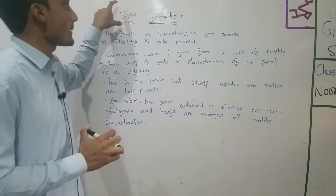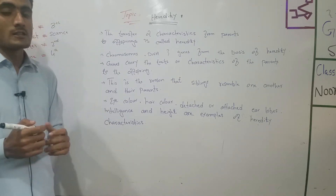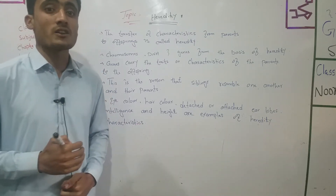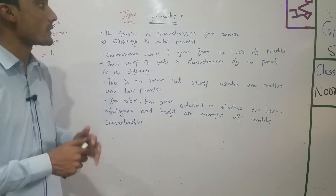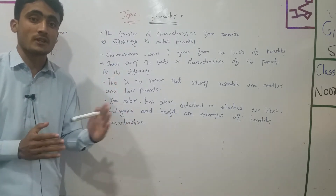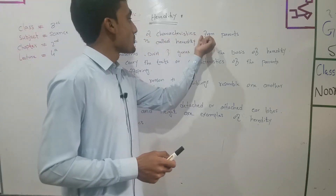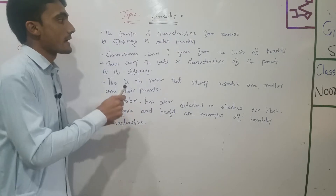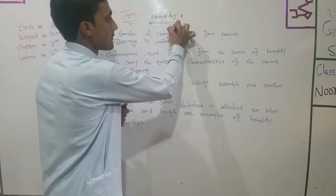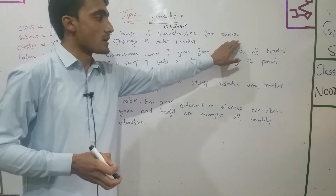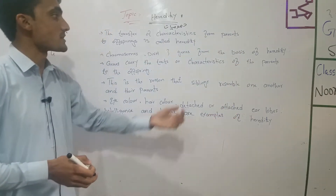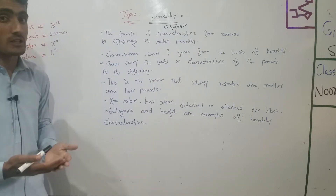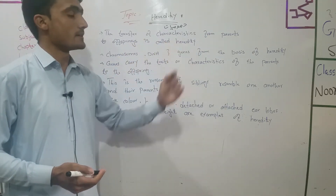The first thing about heredity: the transfer of characteristics from parents to offspring is called heredity. How characteristics come from the parents — validin, ma and baab — to the offspring, bacchota, that is called heredity.